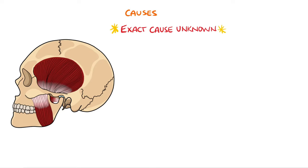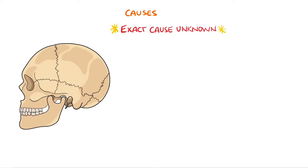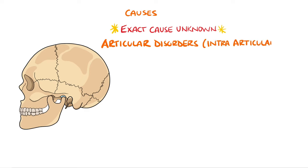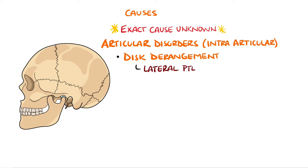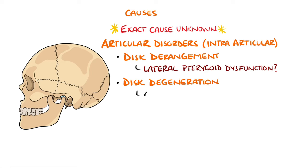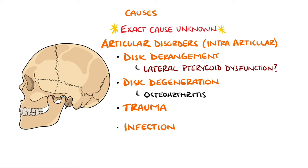The exact cause is not known, but temporo-mandibular joint disorders are divided grossly into articular disorders, meaning intra-articular, or masticatory muscle disorders, meaning extra-articular. Articular disorders could be disc derangement, which is the most common intra-articular cause. One theory suggests the lateral pterygoid muscle contracts instead of relaxing when the mouth closes, leading to disc displacement. Degeneration of the joint such as osteoarthritis, congenital disorders, trauma, or even infections are other articular disorders.